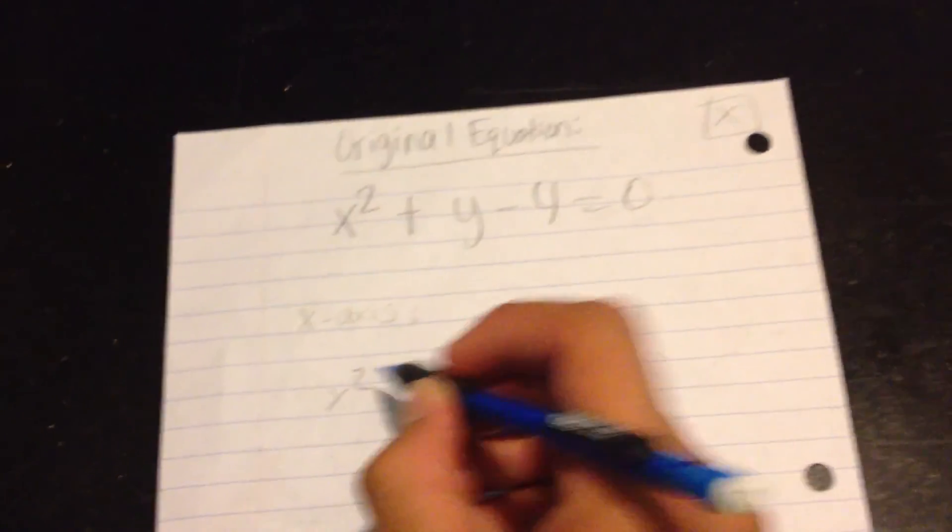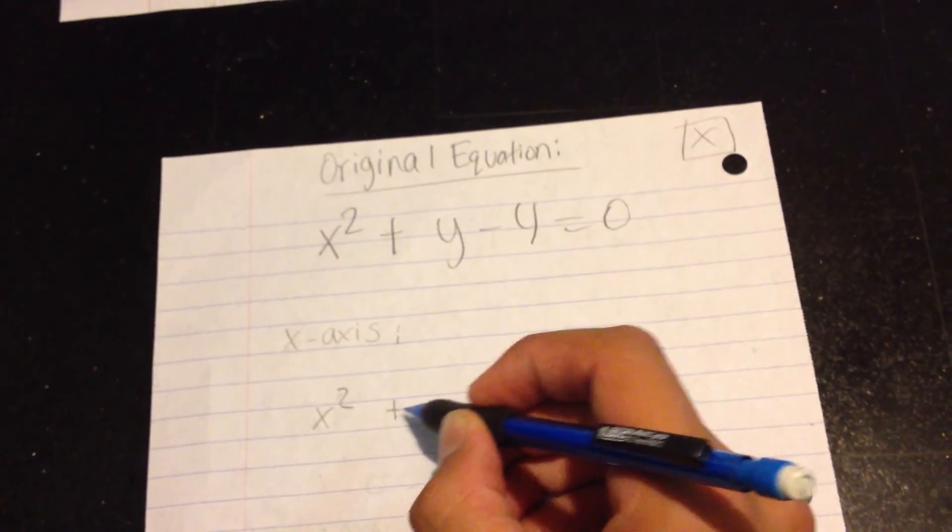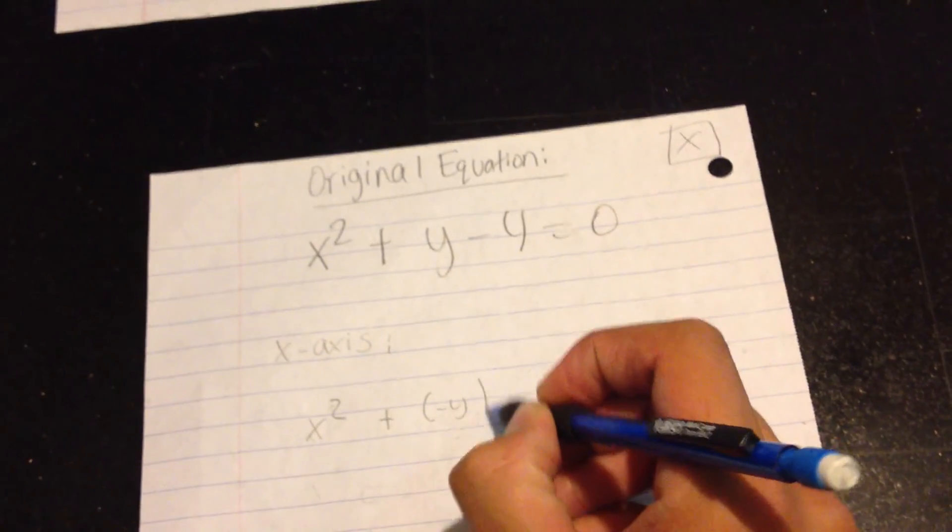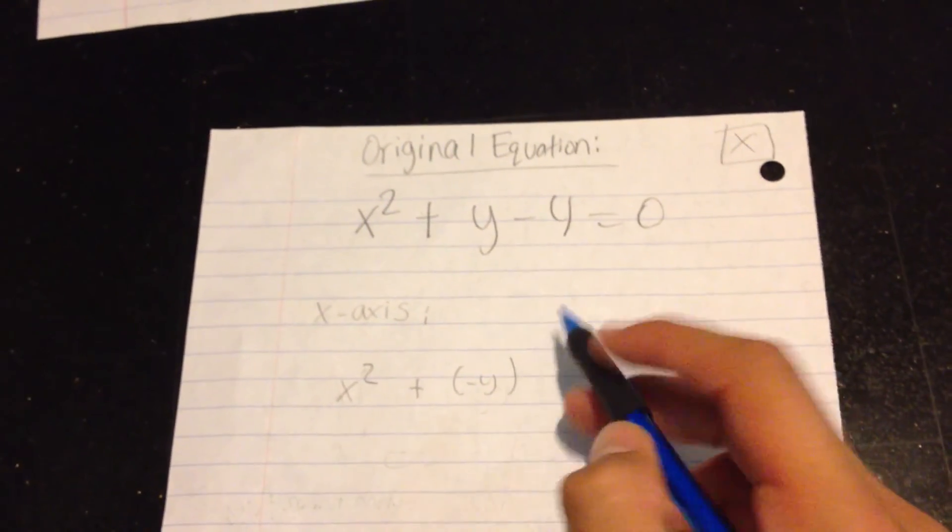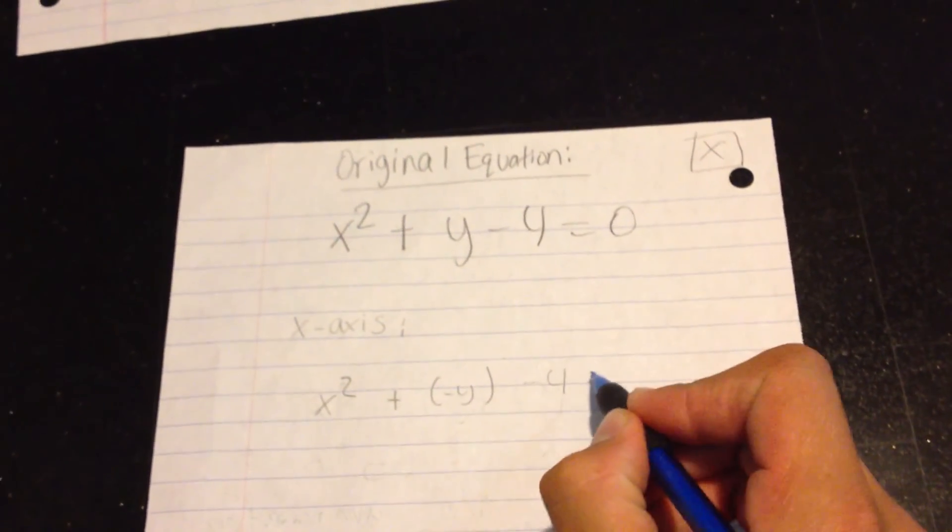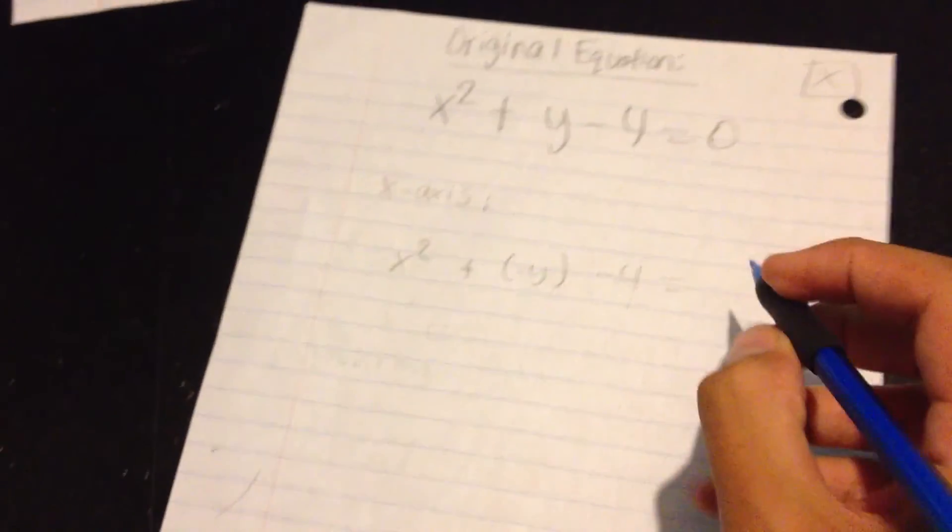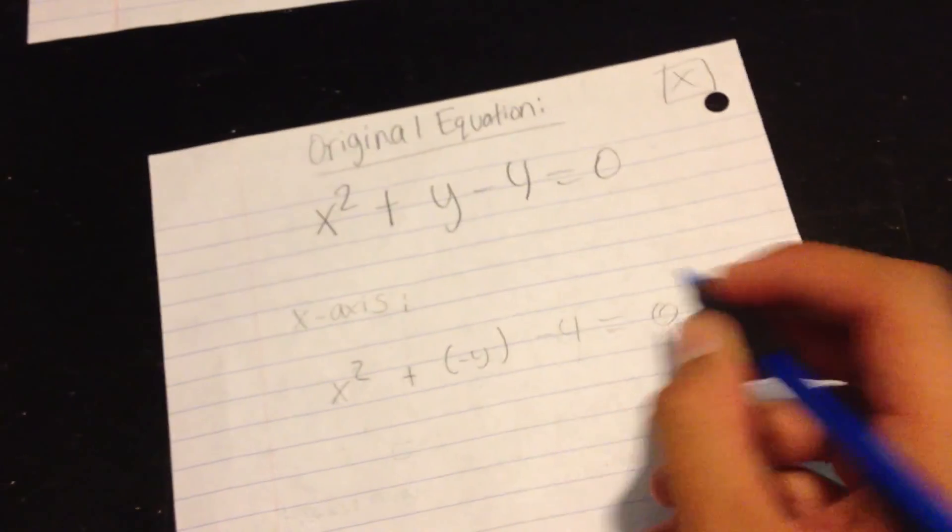x² stays the same, plus a negative y in replacement for that y right there, minus 4 is equal to 0.